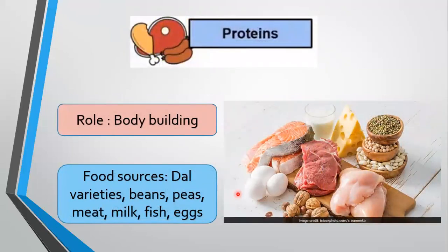Proteins form the main structure of our body. They help in growth and bodybuilding and also in repairing worn out or damaged tissues. Some kinds of proteins help in controlling the activities inside the body — these proteins are called enzymes. Proteins are of two kinds: animal proteins and plant proteins.